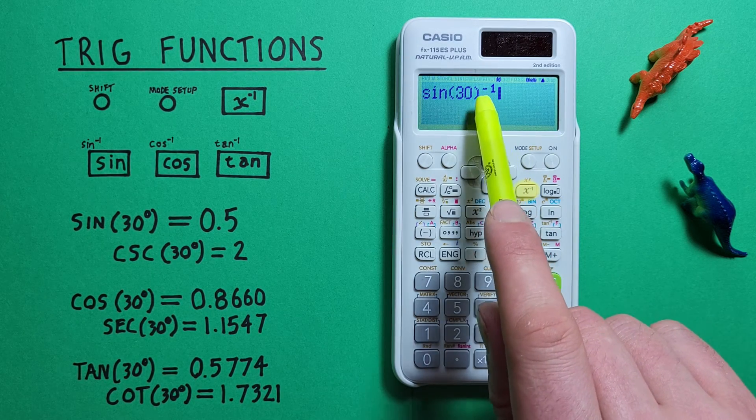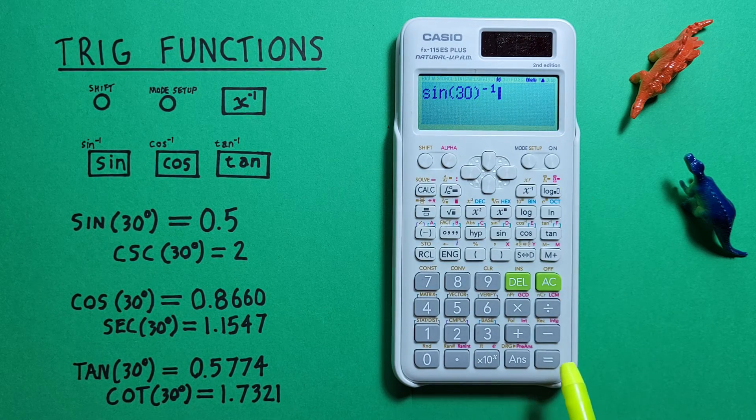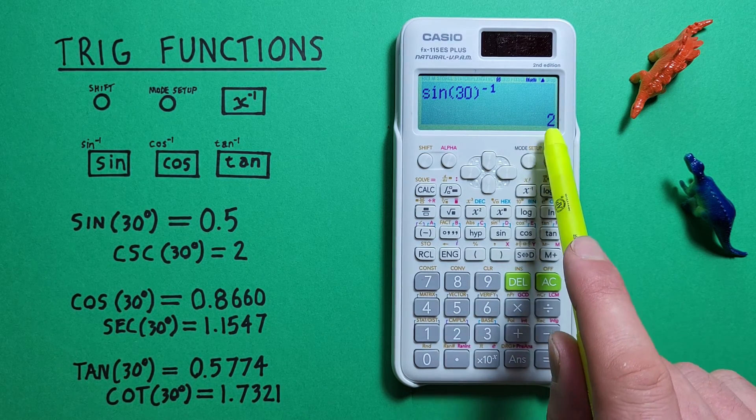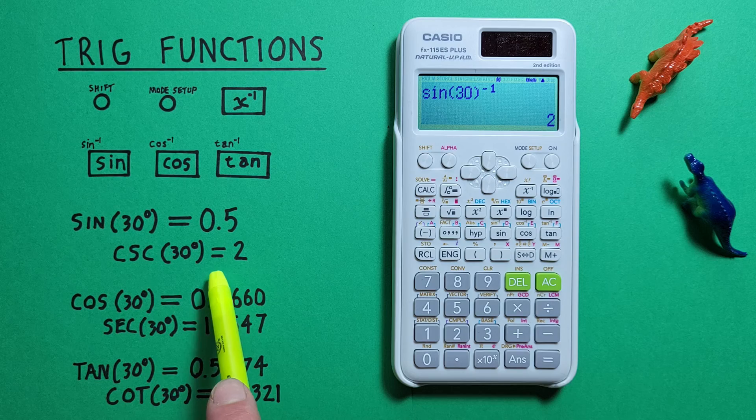There we go, we see the negative 1 there, press equals, and see we get a result of 2. So the cosecant of 30 degrees is equal to 2.